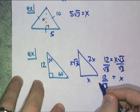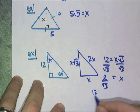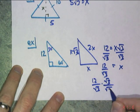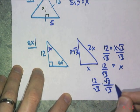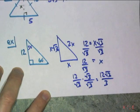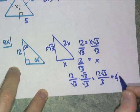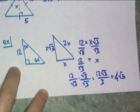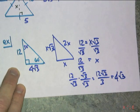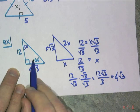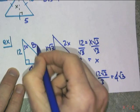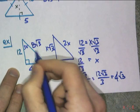We can't leave it like that. We have to multiply by a special case of 1. And that gives us 12 root 3 over 3, which can simplify to 4 root 3. And that is my x right here. And to get the hypotenuse, that's twice as much as 4 root 3, but that would be 8 root 3. Hope that makes sense.